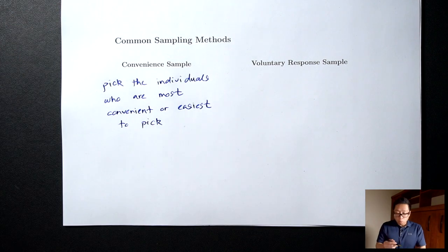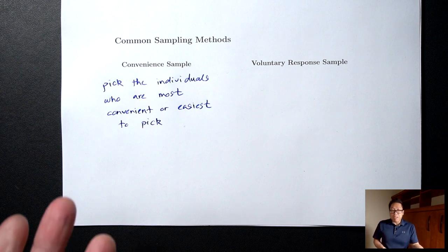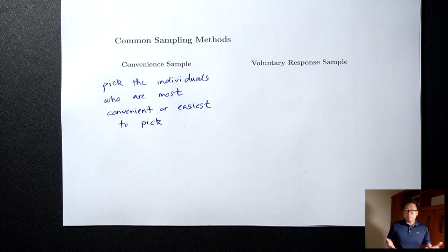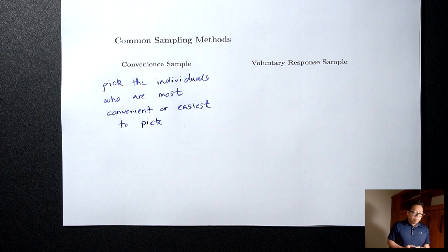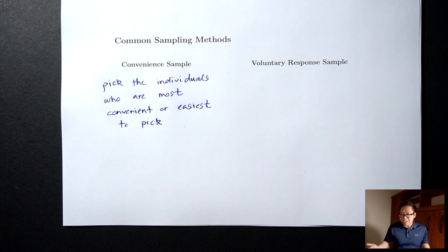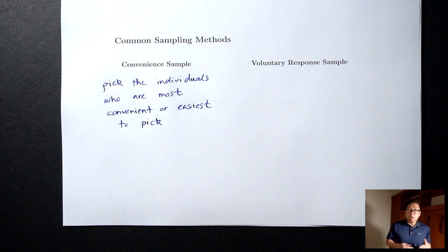Say I own a store and I want to survey my customers. One way I can pick a convenience sample is to pick the first 10 people who enter my store — that's the easiest way. Whoever enters my store first, I pick the first 10 and I'm done. If I just contact my friends because they're the easiest people for me to contact, that's another example of a convenient sample. If I need to measure trees at a park, picking the 10 trees closest to the parking lot — that's a convenient sample.